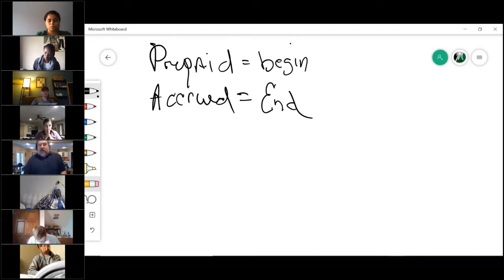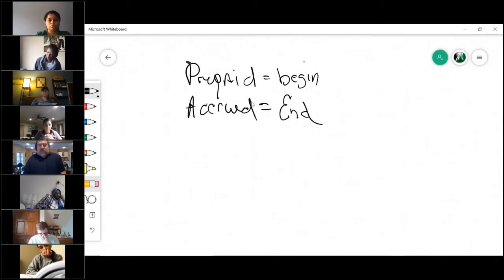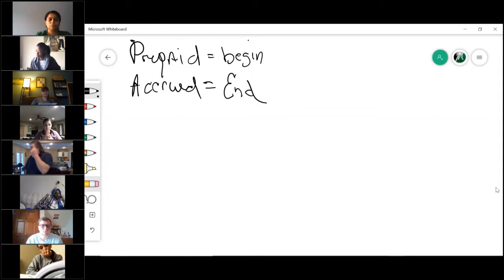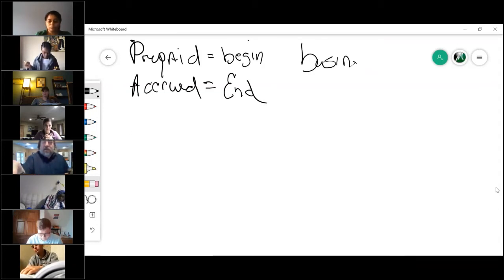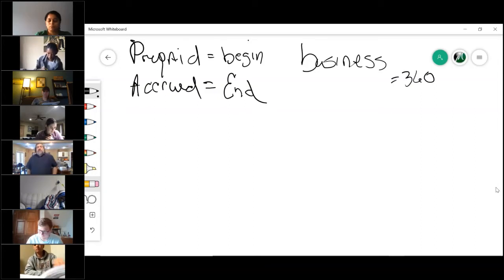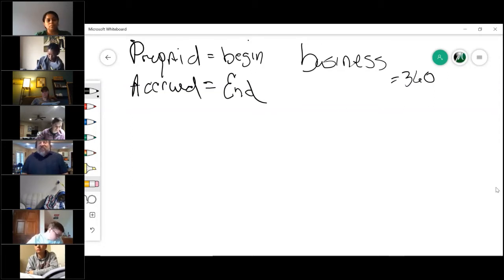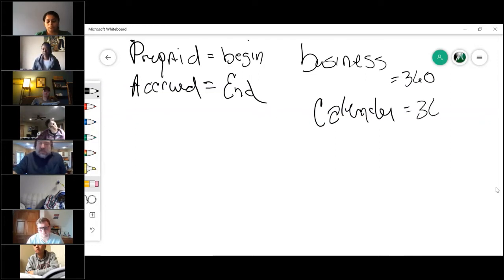The other thing we're going to talk about is this thing they call a business year, which is 360 days: 12 months times 30 days is 360. They use this business year as a concept to make the math really simple for you, versus what they call a calendar year, which is 365 days.